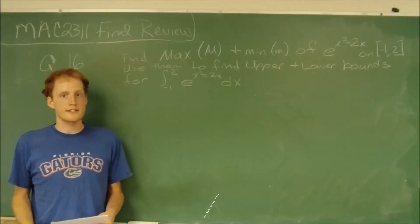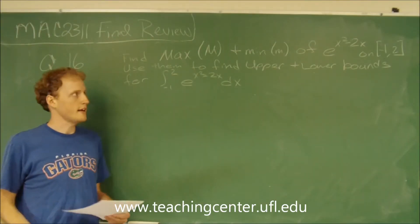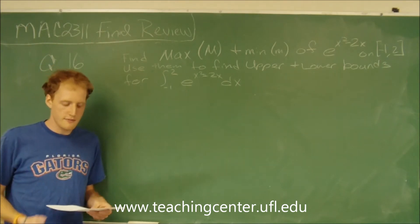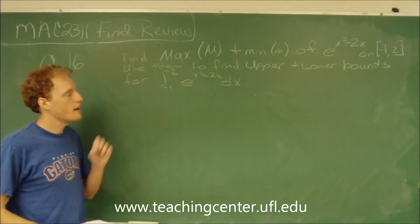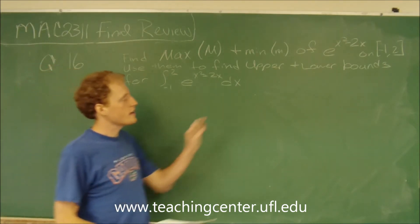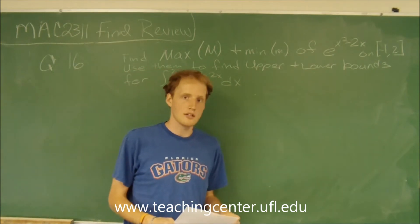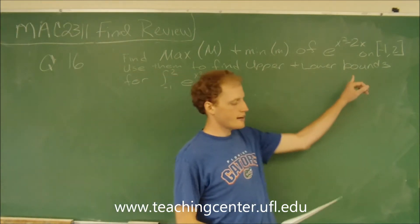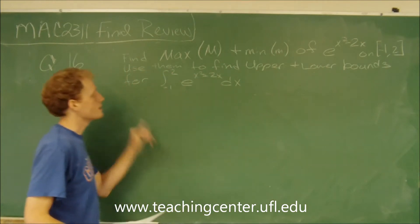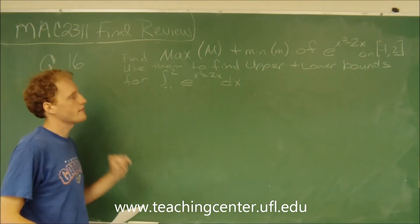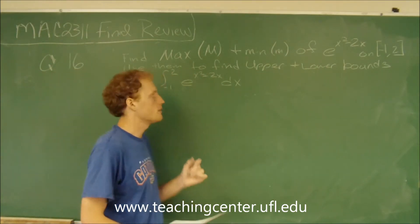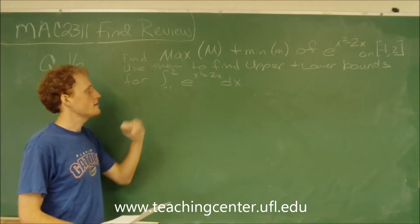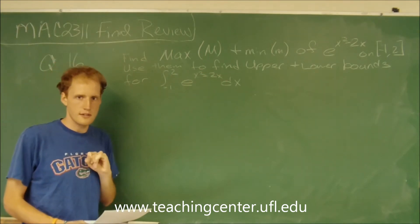This is question number 16. Find the maximum and minimum values M and little m of e to the x squared minus 2x power on the interval from negative 1 to 2, and then use them to find an upper and lower bound for the integral from negative 1 to 2 of this equation.